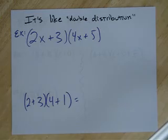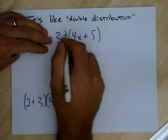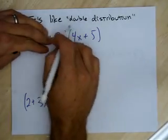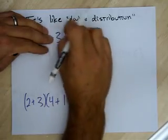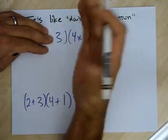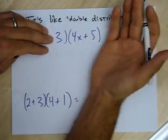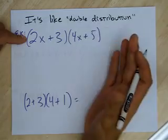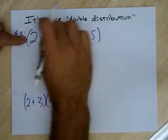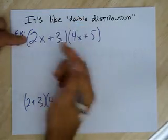We can think about it kind of like double distribution. Remember, we used to have just a constant term outside and we'd multiply it through. Well, we're going to do a similar thing, but now we have two terms outside. So what we're going to do is distribute both of them through.